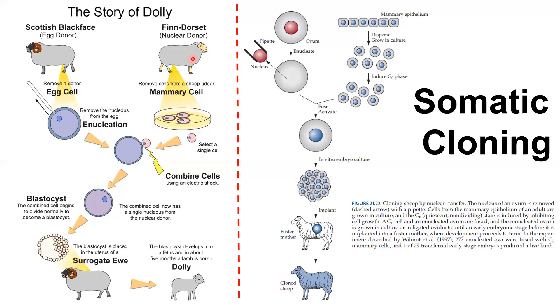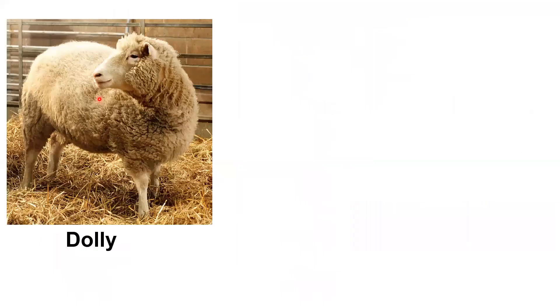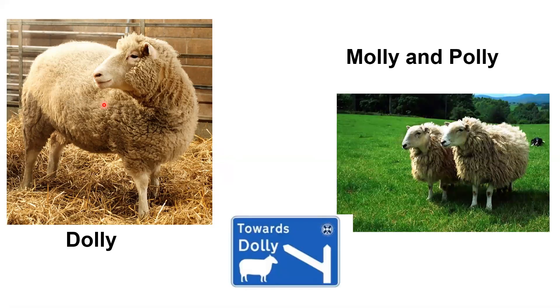Dolly became very famous, but just a few hours after Dolly's birth, two more sheep named Molly and Polly were born from the same series of experiments. Very few people know about Molly and Polly, even though their births were just hours apart from Dolly's. Interestingly, Dolly died young, while Molly and Polly survived longer, though Dolly remains the famous one.